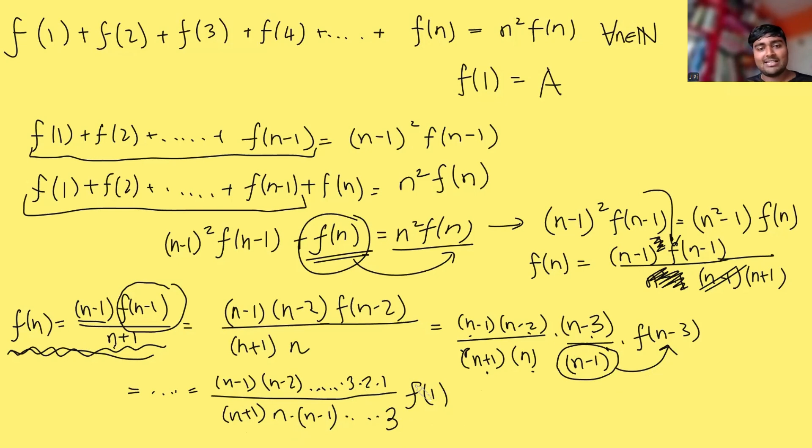but as we can see a bunch of things cancel this n-1 cancels with that n-1 the n-2 there there'll be an n-2 there and this 3 cancels with that 3 so I'm simply left with 2 lots of f(1) which is a divided by n(n+1) like so so this function f(n) does have a nice closed form it's 2a divided by n times (n+1)